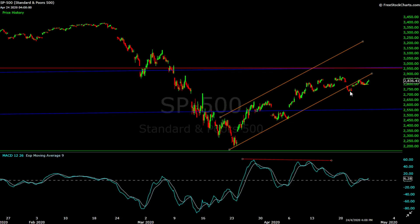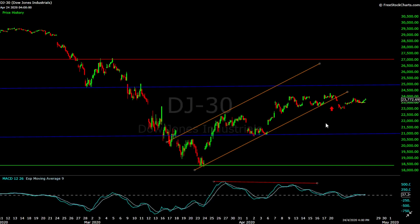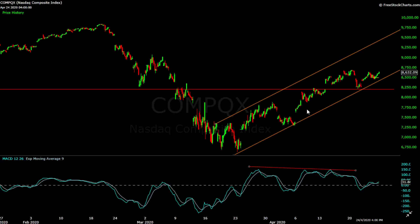The price moved higher to attempt to recapture the trend channel but did not manage to penetrate back into it. This is typical of how a breakout strategy works — it breaks the trend channel, makes a weak retracement, and there's a high chance of dropping further down. A similar setup is visible in the Dow, however the Dow is even weaker — it has dropped even further from the bottom trend channel and the MACD is also confirming further weakness.